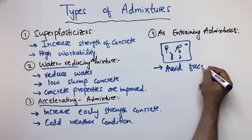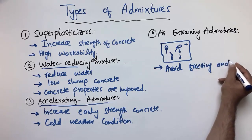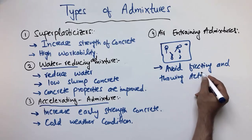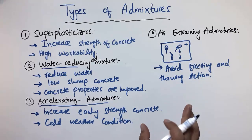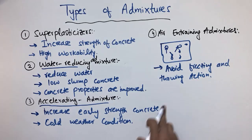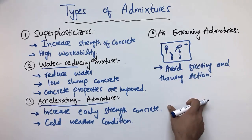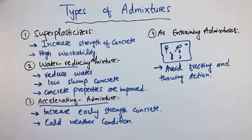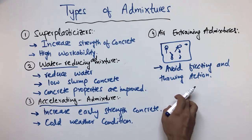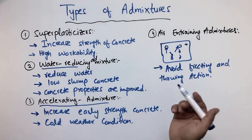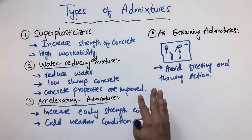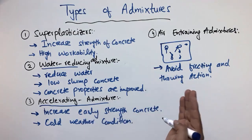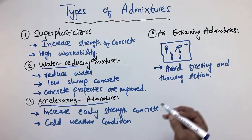The main purpose is to avoid the freezing and thawing action, and they are mostly used in cold weather. The strength of this type of concrete is lower compared to normal concrete because of these air voids. If you have normal concrete, you have only three to four cycles of freezing and thawing, while with the help of air entraining admixture we can have 100 cycles of freezing and thawing without making any damage to the concrete.